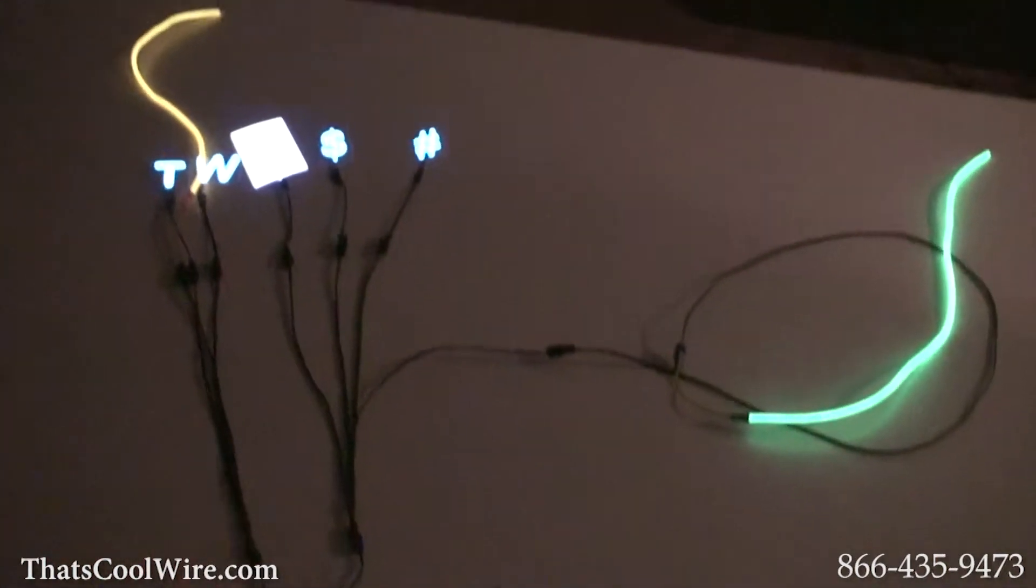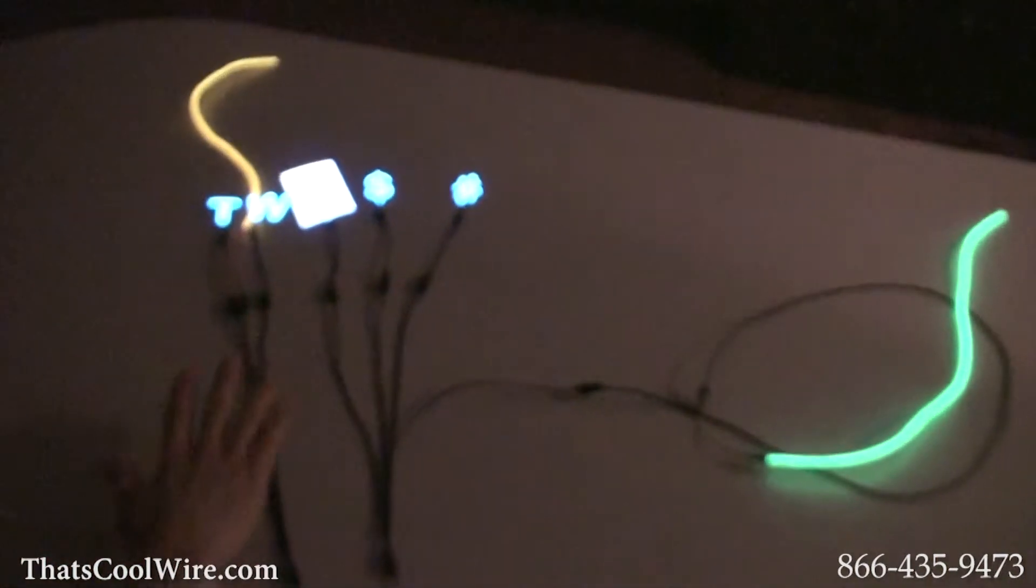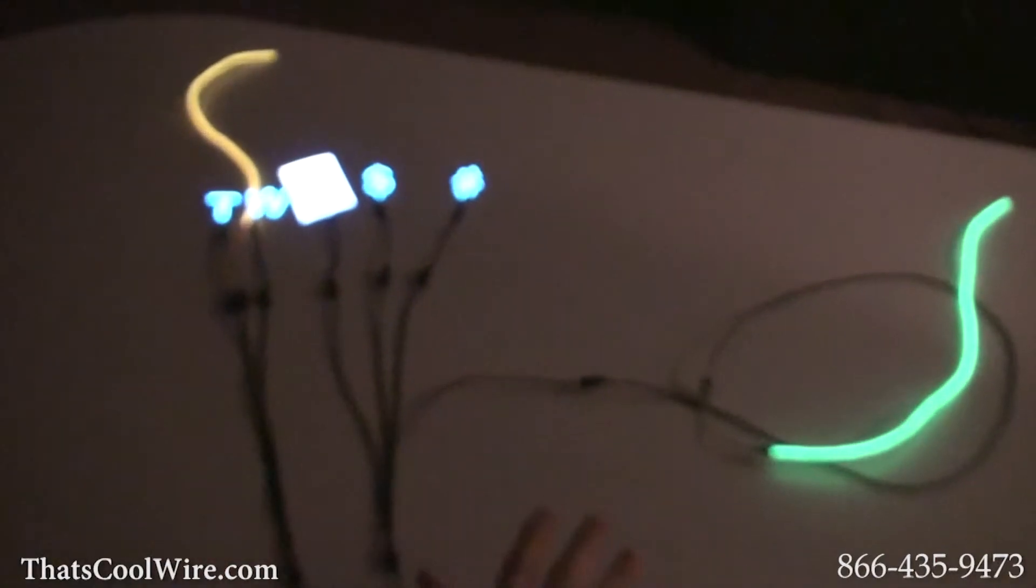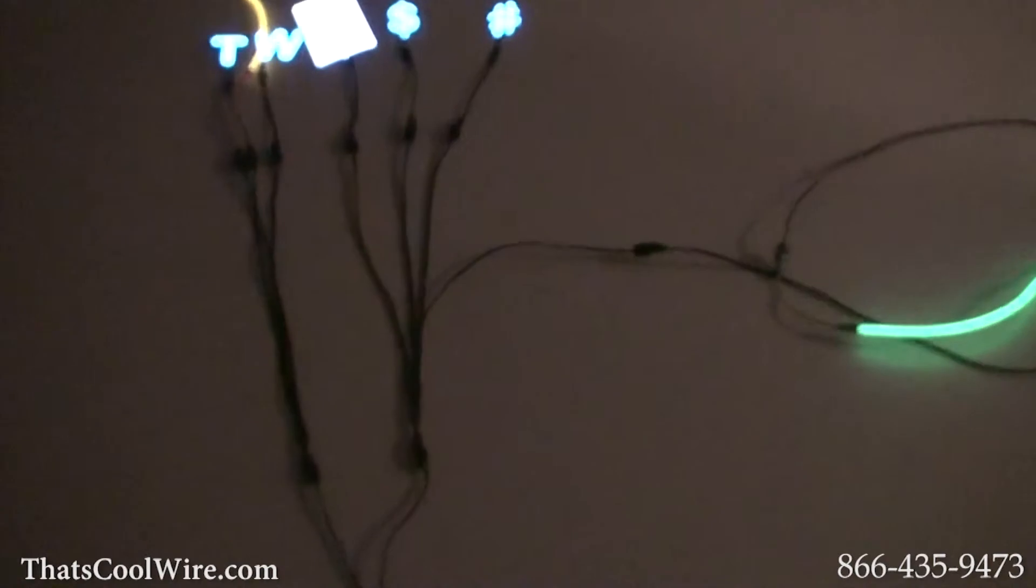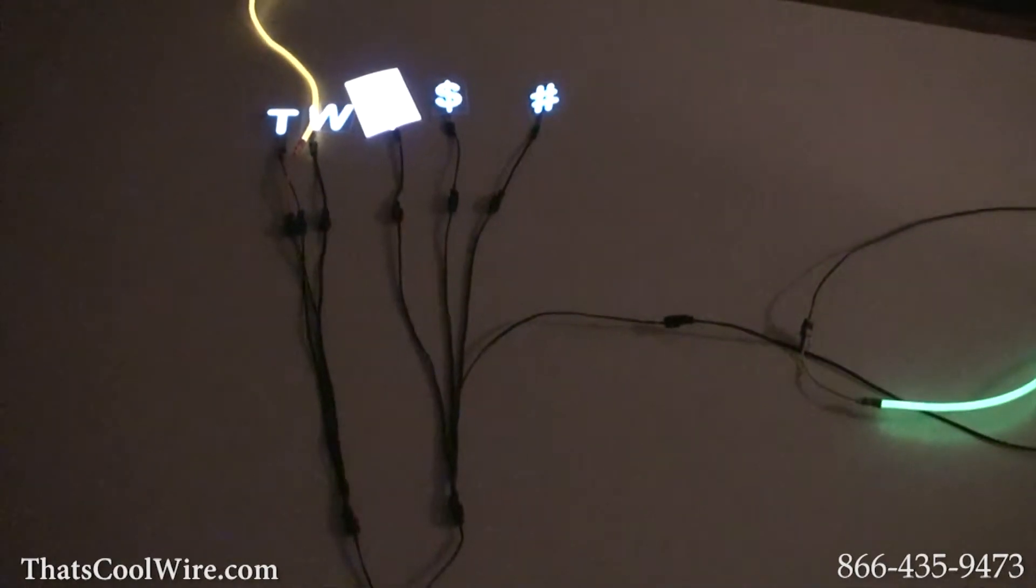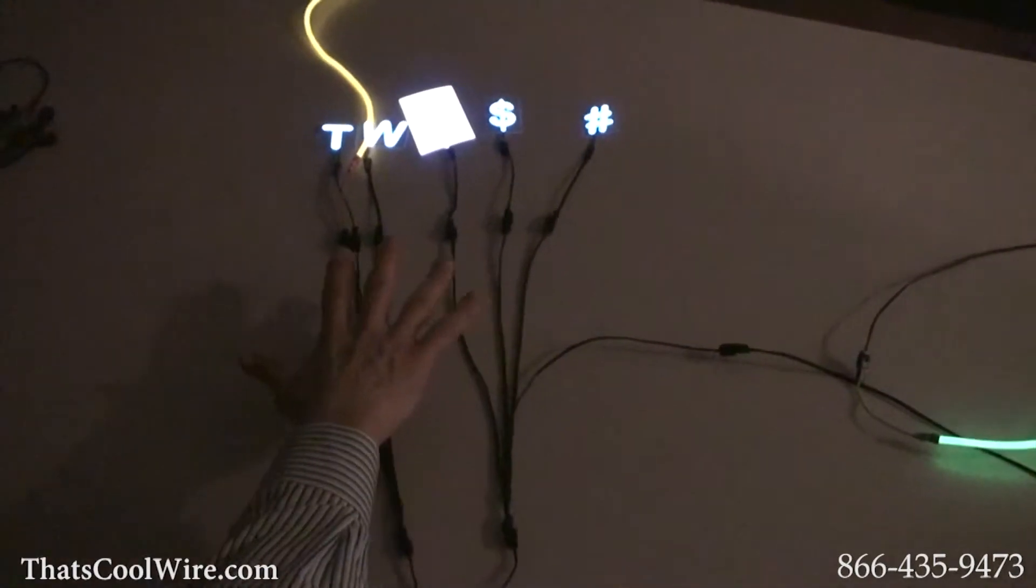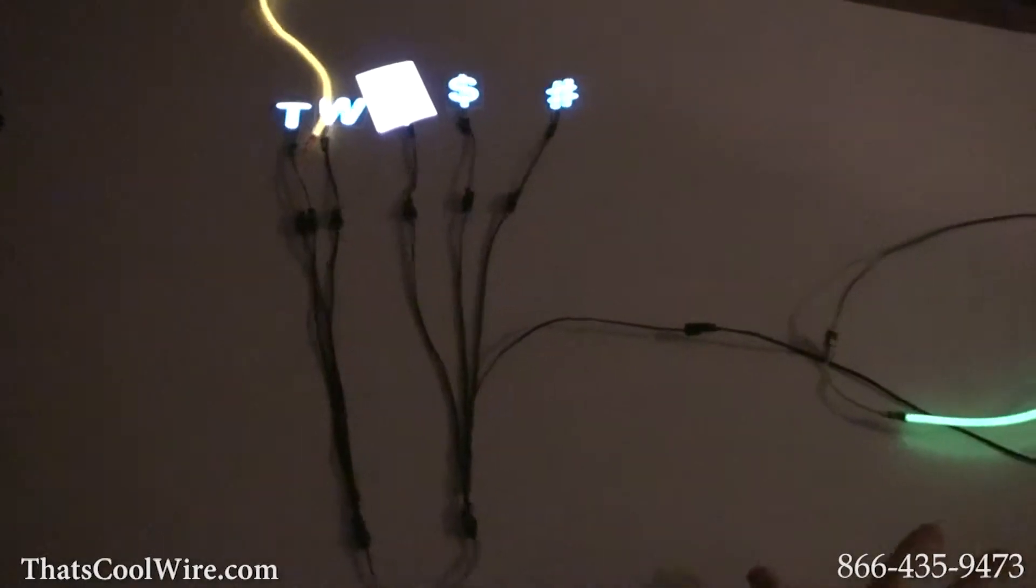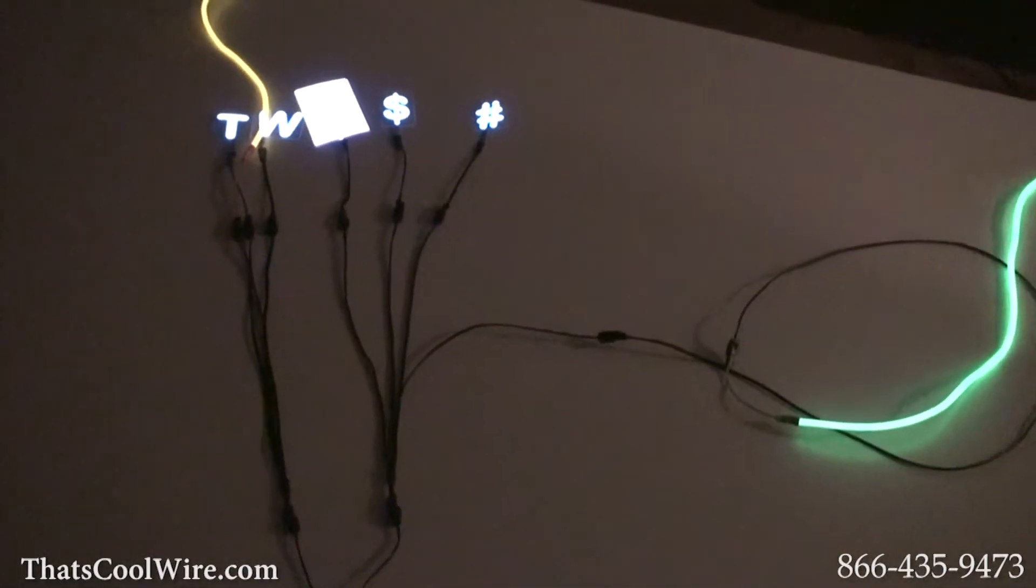One last thing: if you want to have one section of whatever you're doing blinking and one section constant, then you would create two different splitters. So just think of the first inverter, if that's your constant one, then that section will stay on constant, and if the other section will be blinking if that's what you want to do.